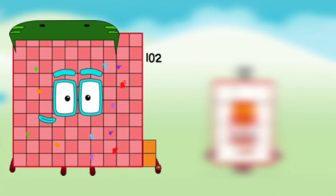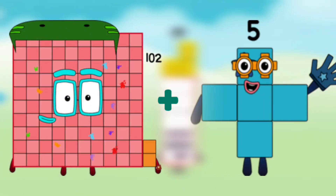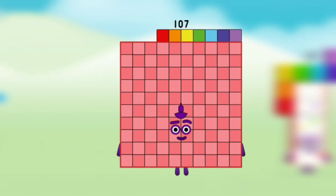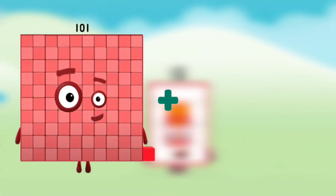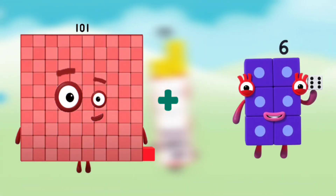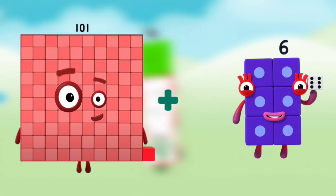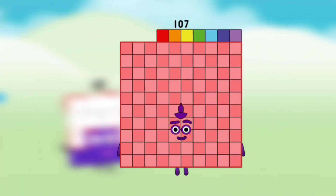Number blocks 102 plus number block 5 equals number blocks 107. Number blocks 101 plus number block 6 equals number blocks 107.